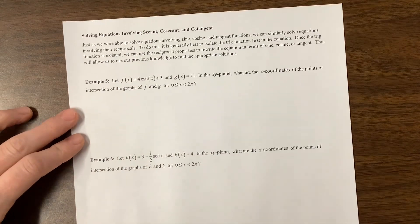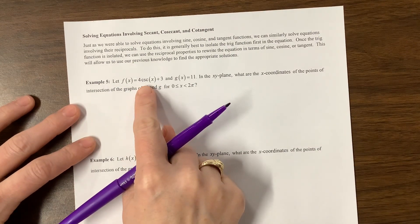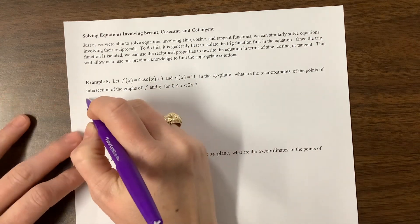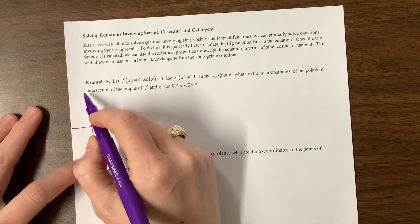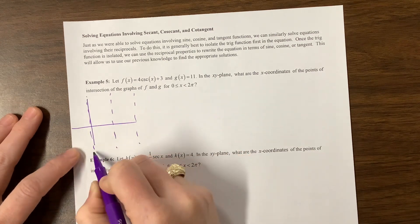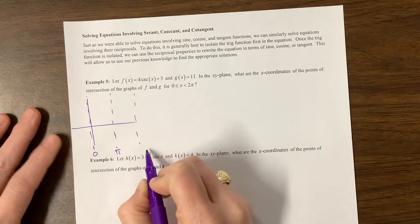Well, let's set these things equal to each other. One of my options would be, what does this graph look like? Cosecant would have an asymptote at 0, and an asymptote at π, and an asymptote at 2π. So here's 0, here's π, here's 2π.